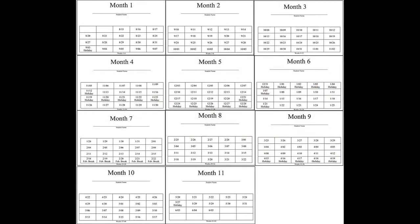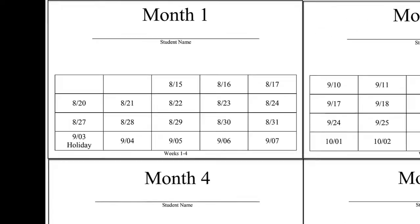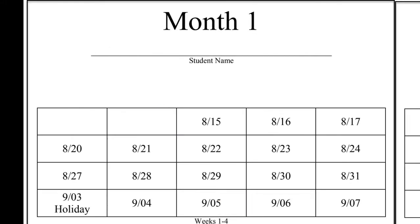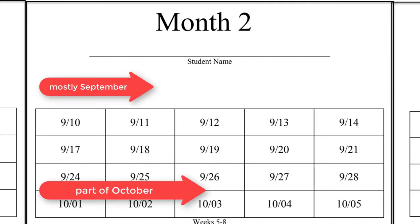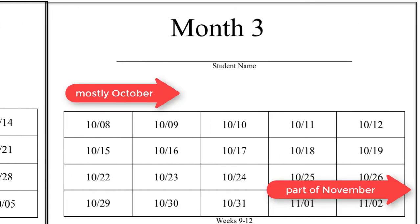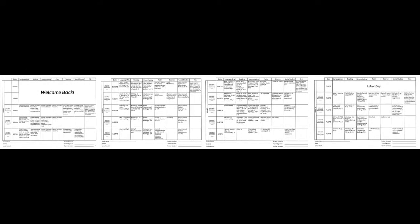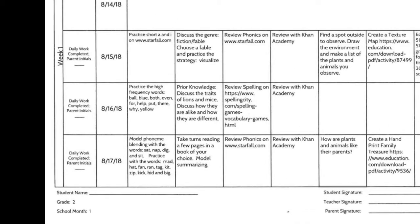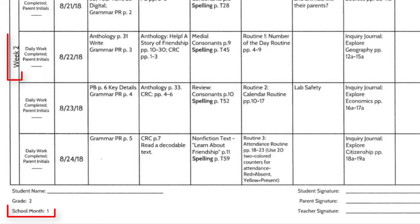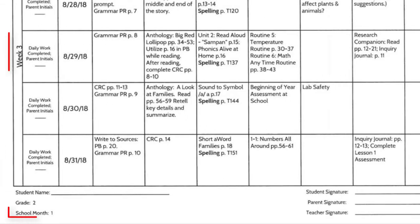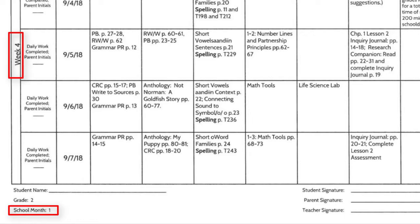There are some important things to notice about the work log documents. All of the work logs for one school year are divided across 11 months. Our work log calendar does not contain weekends, and so it does not match up evenly with the months of a regular calendar year. Each of the 11 months is divided into four log sheets, each representing one week of school, Monday through Friday. Each log sheet has the month and the week of our school calendar written on it.